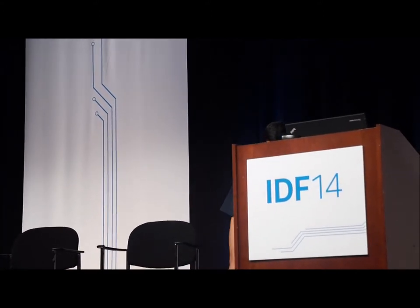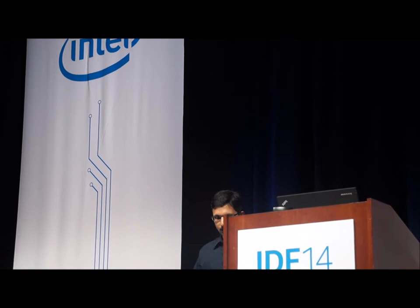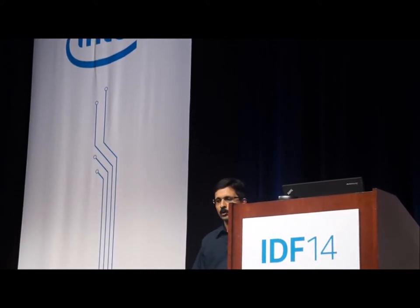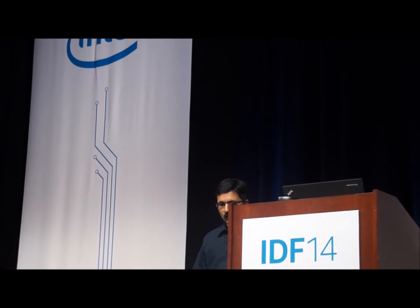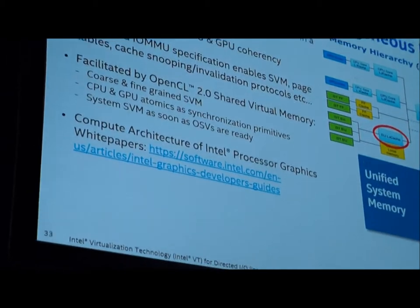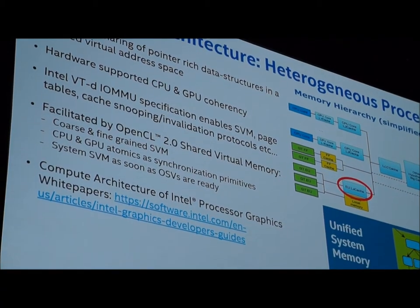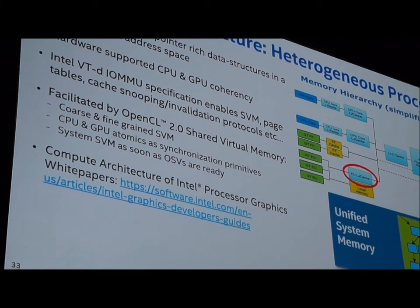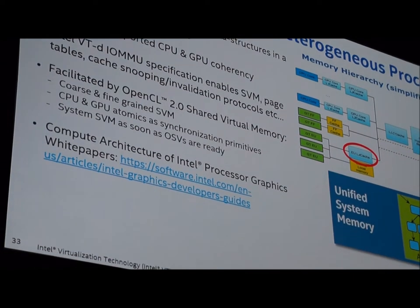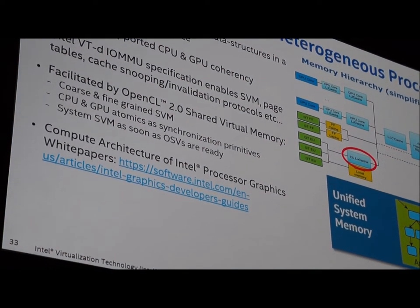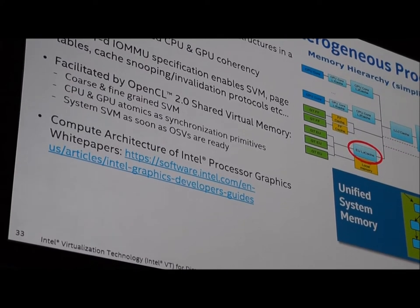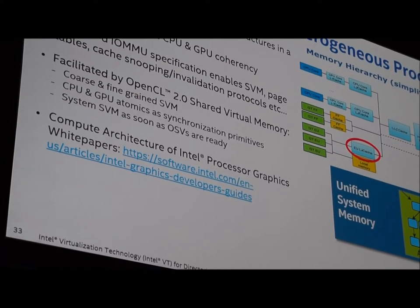Moving to heterogeneous processing or Shared Virtual Memory (SVM): heterogeneous processing allows a programmer to write a program using the same virtual address space across both the GPU and CPU. Pointers all use the same space, so the programmer does not need to manually manage data movement between processors — data stays where it is and only pointers need to be passed. For the first time, shared virtual memory has been implemented on Intel microarchitecture on Broadwell.